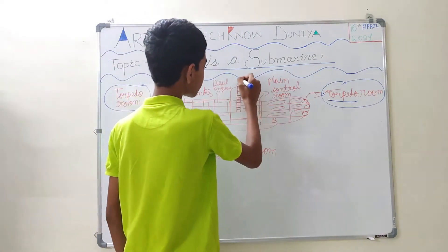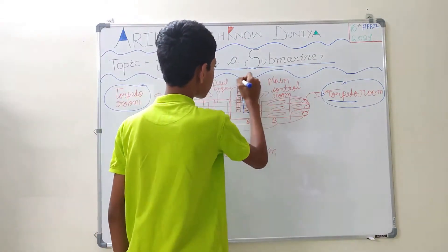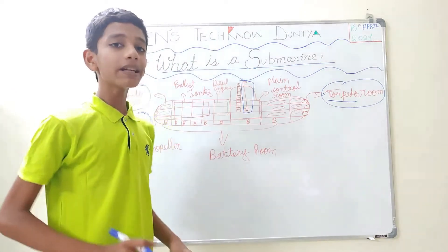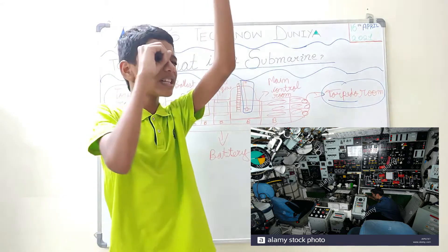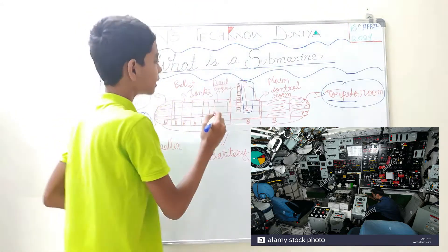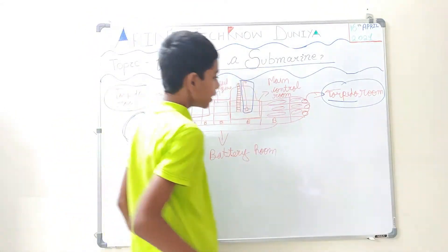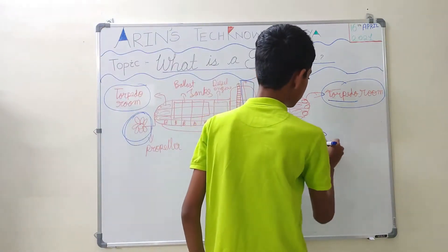Here, you can see this is the very important part of submarine: a periscope. You might have seen in science, you keep the periscope over here and you can see the things which are happening over here. That is the periscope that is also used in submarines.